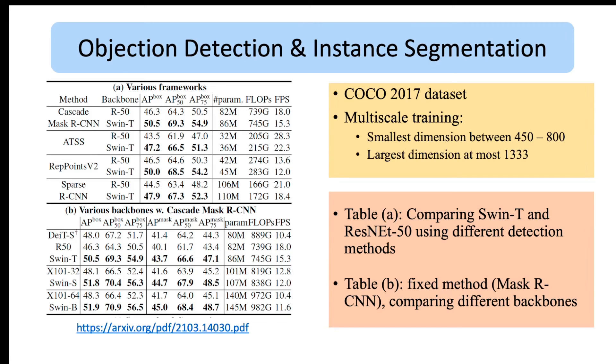In table B the detection framework is fixed to the framework in Mask R-CNN, and instead comparing different backbones like DeiT, ResNeXt, and Swin models. In this case also, Swin-T and Swin-B outperform their counterparts with similar model sizes.